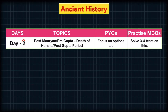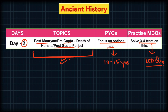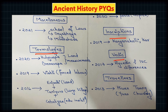On Day 2, having covered the Mauryan period on Day 1, you now take it from the post-Mauryan or pre-Gupta period through the post-Gupta period up to the death of Harsha. Follow the same approach: 10 to 15 years of PYQs focusing on each and every option, then practice MCQs from 3 to 4 tests — targeting 150 questions in ancient history apart from PYQs. I have elaborated a chart of all ancient history questions from the last 10 years, topic-wise, which you can refer to.